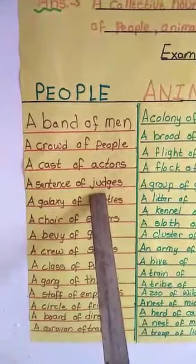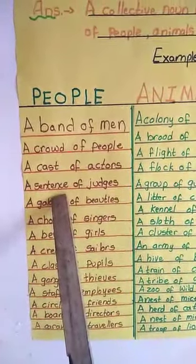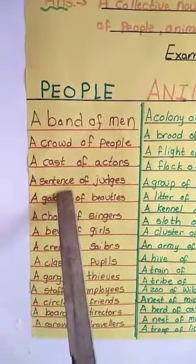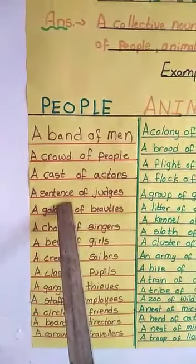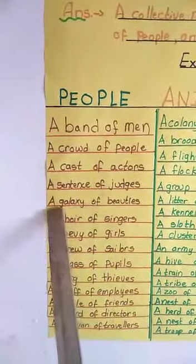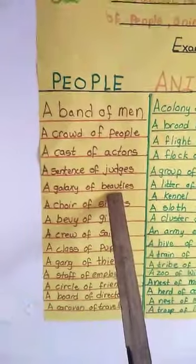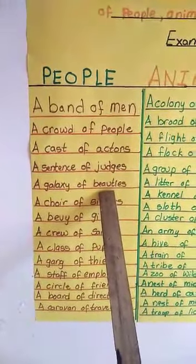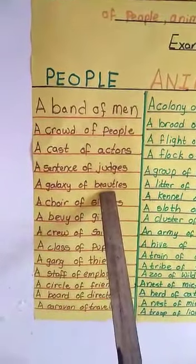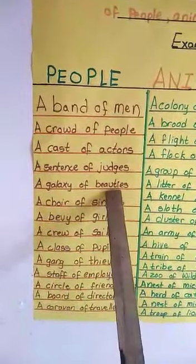A sentence of judges means in a court there are judges, lawyers, and advocates. Those people working in these fields are called a sentence of judges — a group of judges. A galaxy of beauties is in terms of models, those participating in beauty pageants. So they are called a galaxy of beauties.